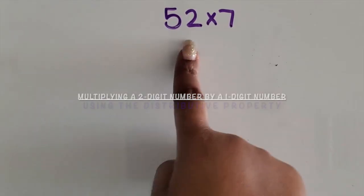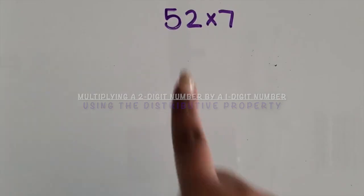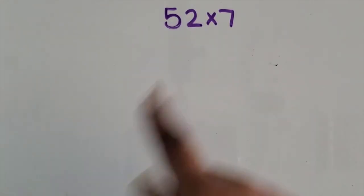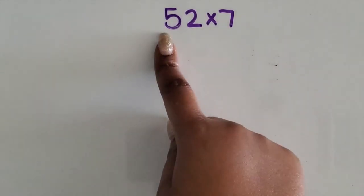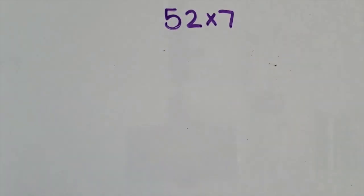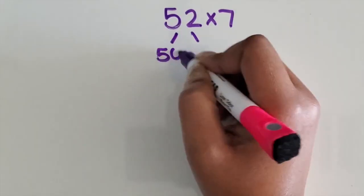We're going to multiply a two-digit number by a one-digit number using the distributive property. Now that we have a multi-digit number as one of our factors, we can break it apart or decompose it in many different ways. One of the ways is by the tens place and the ones place, so I decompose 52 into 50 and 2.